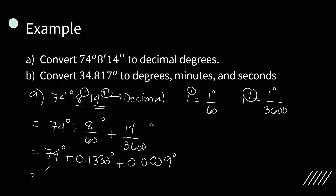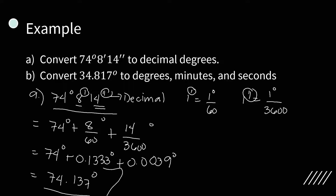Then adding, we have 74 plus 0.1333 plus 0.0039, this is equal to 74.137 degrees. So this DMS in decimal is 74.137 degrees.